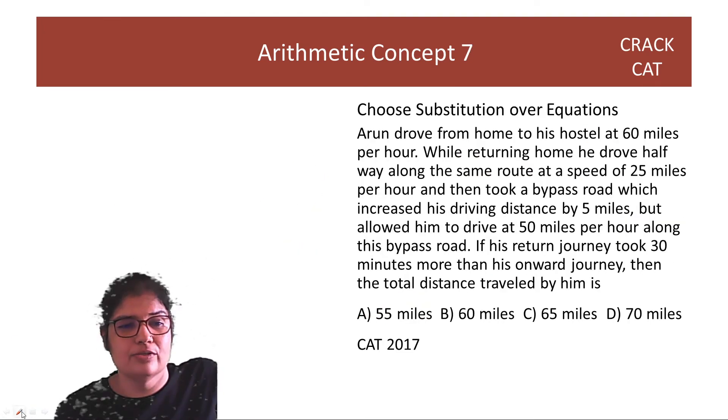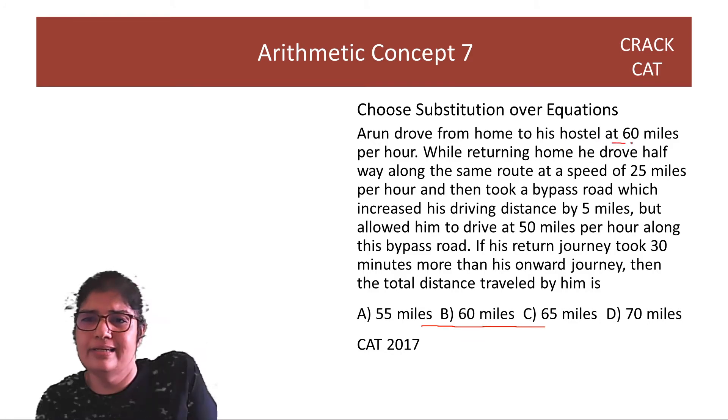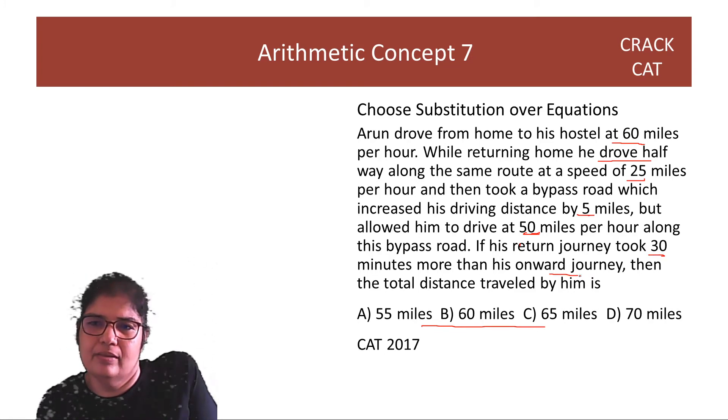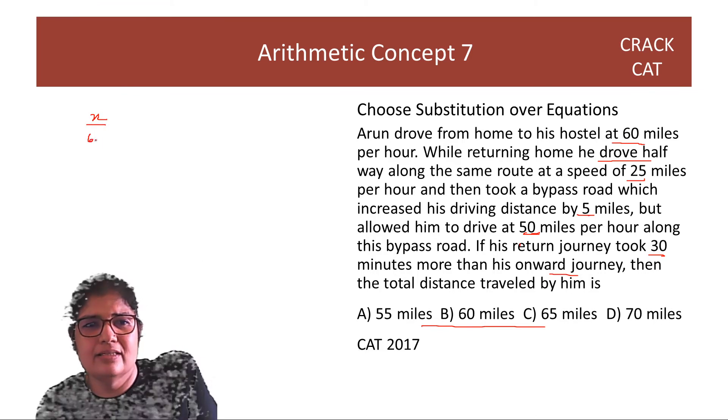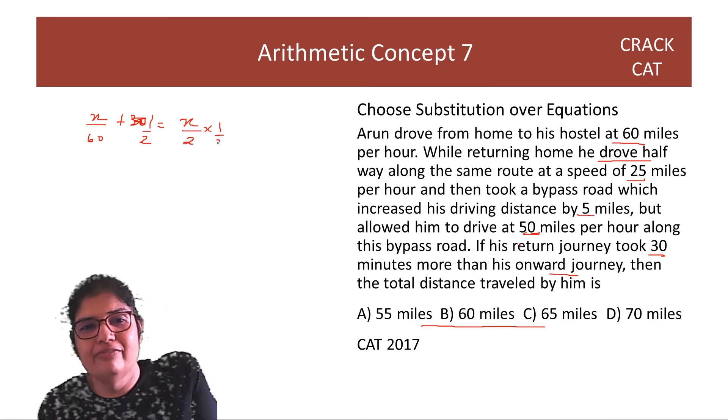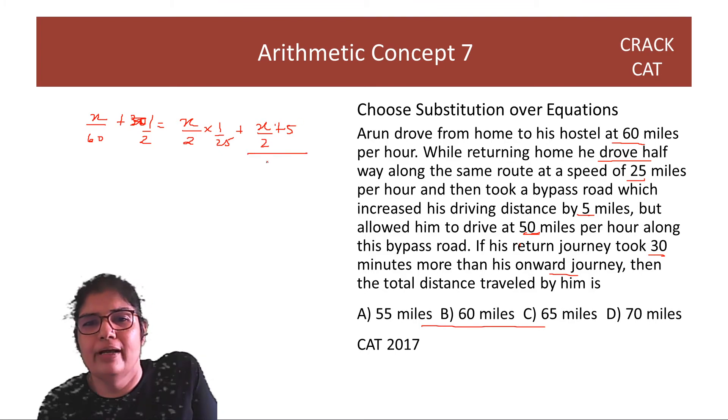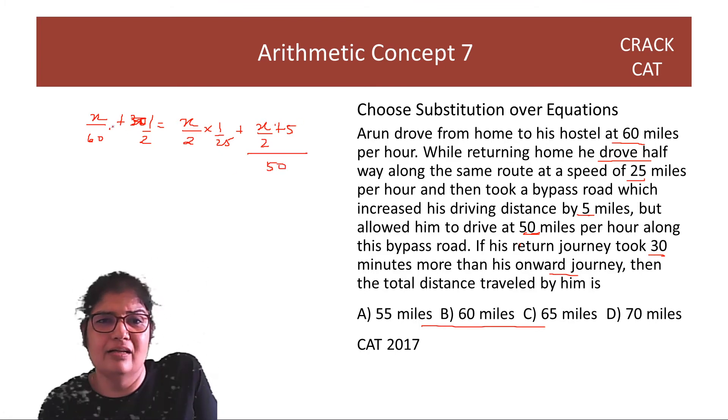Next concept. Choose substitution over equations. Don't always, don't start with X. See whether you can easily substitute. And always start with the easiest substitution. So, Arun drove from home to his hostel at 60. While returning home, he drove half at 25. And then he took a bypass where he could drive at 50. Return journey took 30 minutes more. Now, instead of doing X by 60 plus 30 minutes, which is half an hour, is equal to, just look at how I just get so bored when I do all this. That aadha rasta at 25 and aadha rasta plus 5, the whole by 50. Let me. Kitna, just, it's ugly.